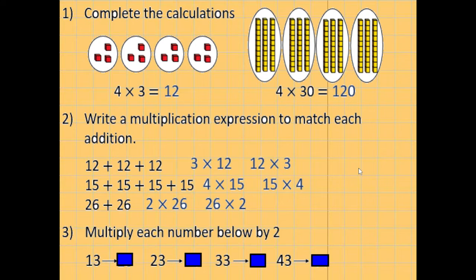And then the last one, we're going to multiply each number by 2. If you want to do it using column multiplication, that is absolutely fine. Or try and do it in your head. So 13 multiplied by 2 is 26. 23 multiplied by 2 is 46. 33 multiplied by 2 gives us 66. And 43 multiplied by 2 gives us 86. Well done if you got those right.